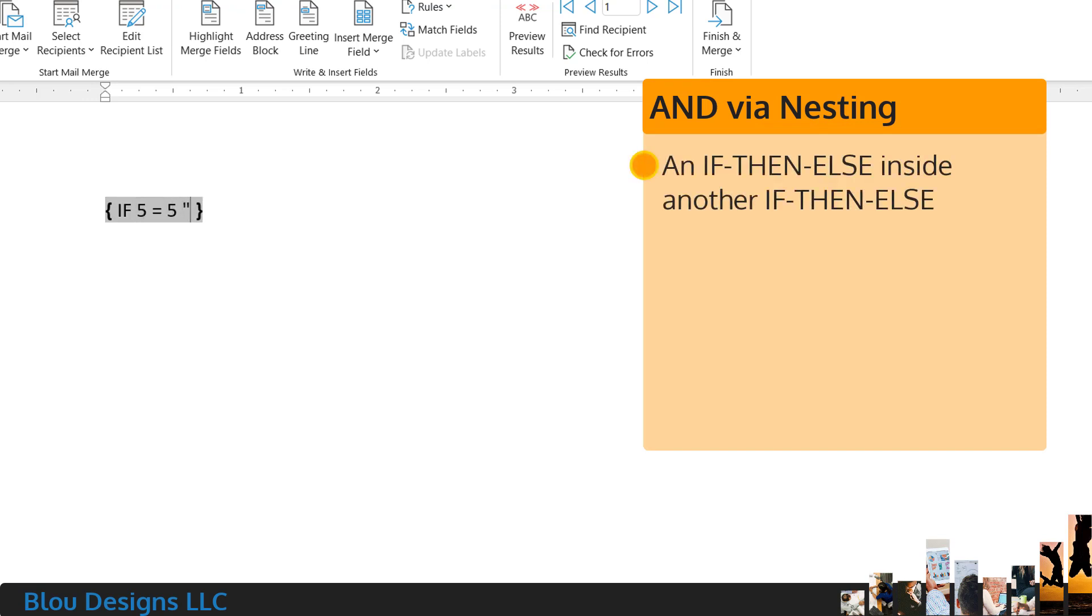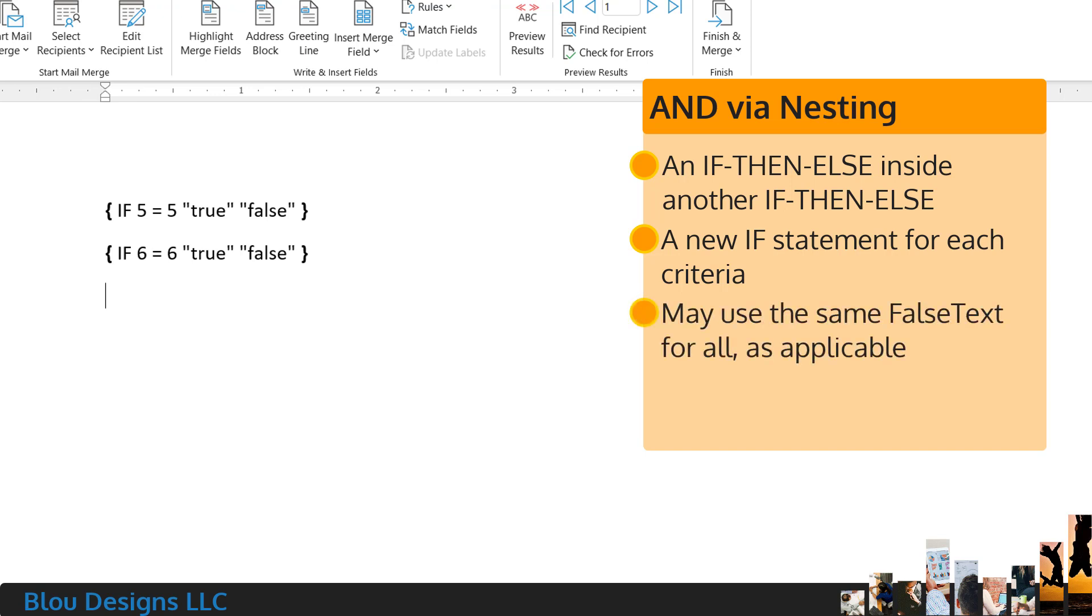I'll start with the nested if-then-else. Nesting means that we're going to put an if-then-else inside of another if-then-else. And we're going to use a new if statement for each of our criteria. So our first if-then-else will check if 5 equals 5 with true text and false text values. And our second if-then-else will check if 6 equals 6 with true text and false text set to the same values as the 5 equals 5 check.